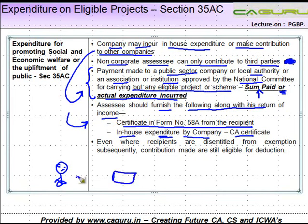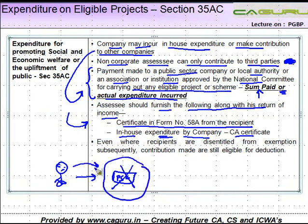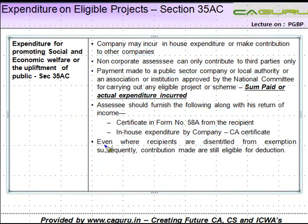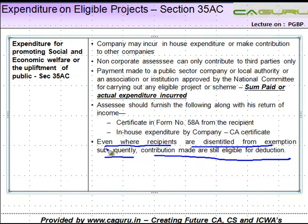In some cases, the assessee makes a payment to a public sector company or other eligible person, but subsequently that company is disentitled from the exemption. Irrespective of this, if the contribution was made and Form 58A receipt was obtained before the company was disentitled, the deduction is still available. Contributions made are still eligible for deduction even where the recipients are disentitled from exemptions subsequently.